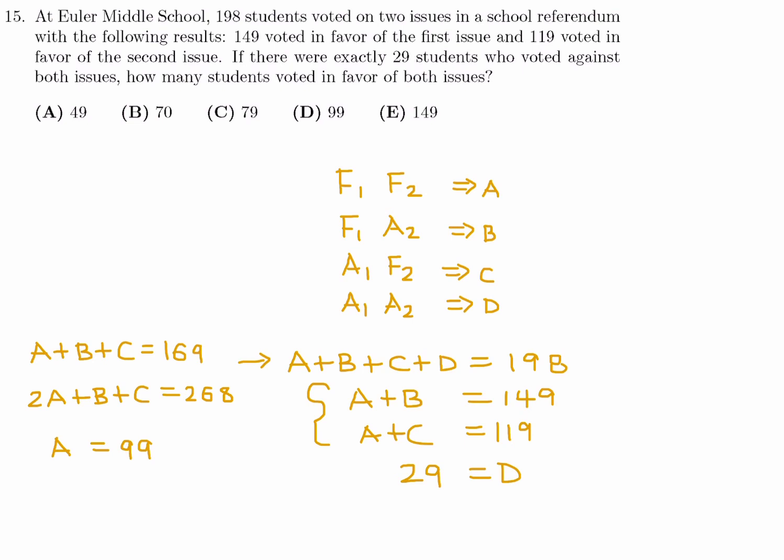And I think that's what they wanted us to figure out. How many students are in favor of both issues? And that's this guy right here. So 99. So number 15, the answer is D.